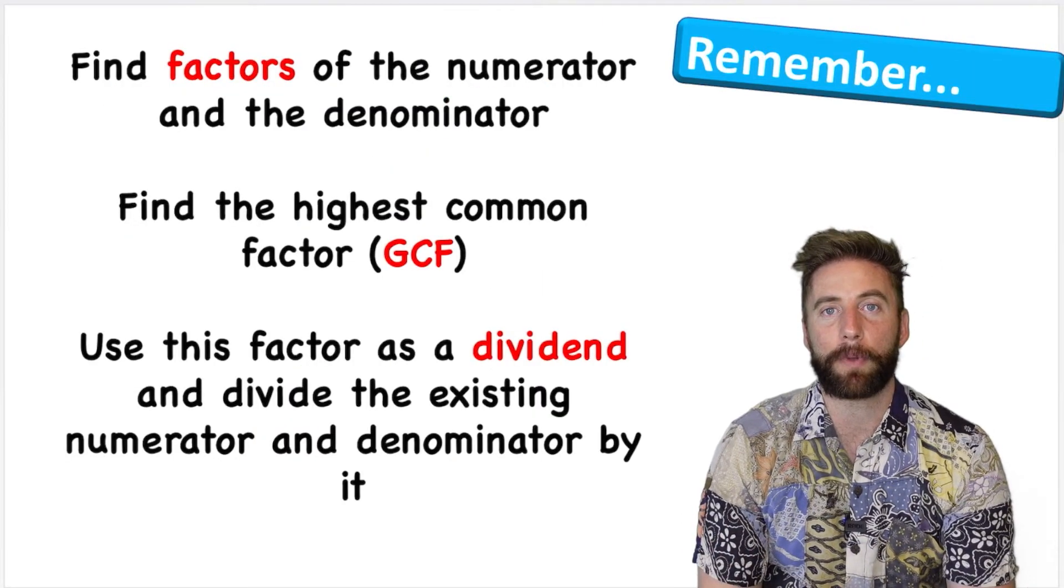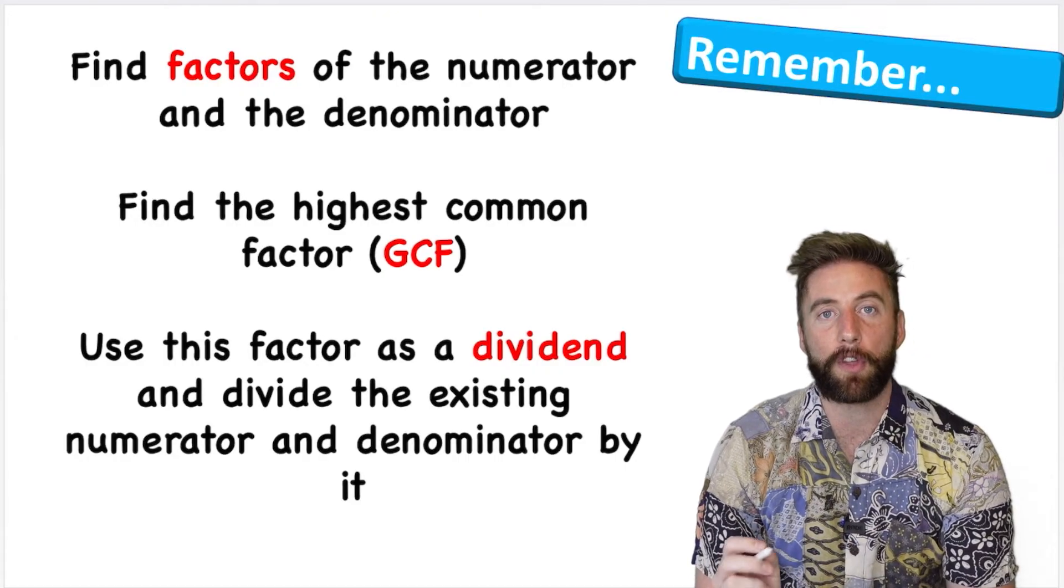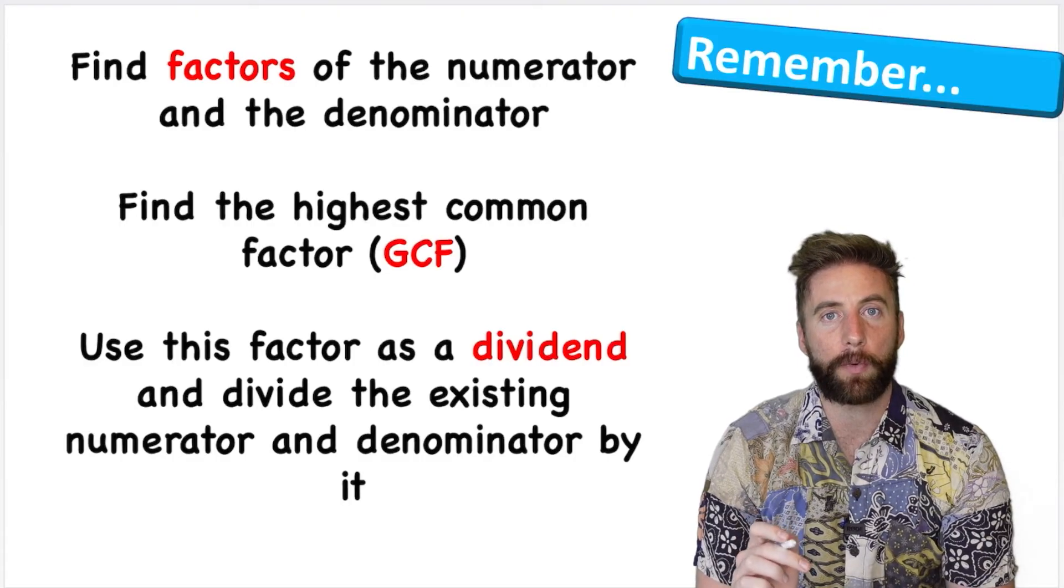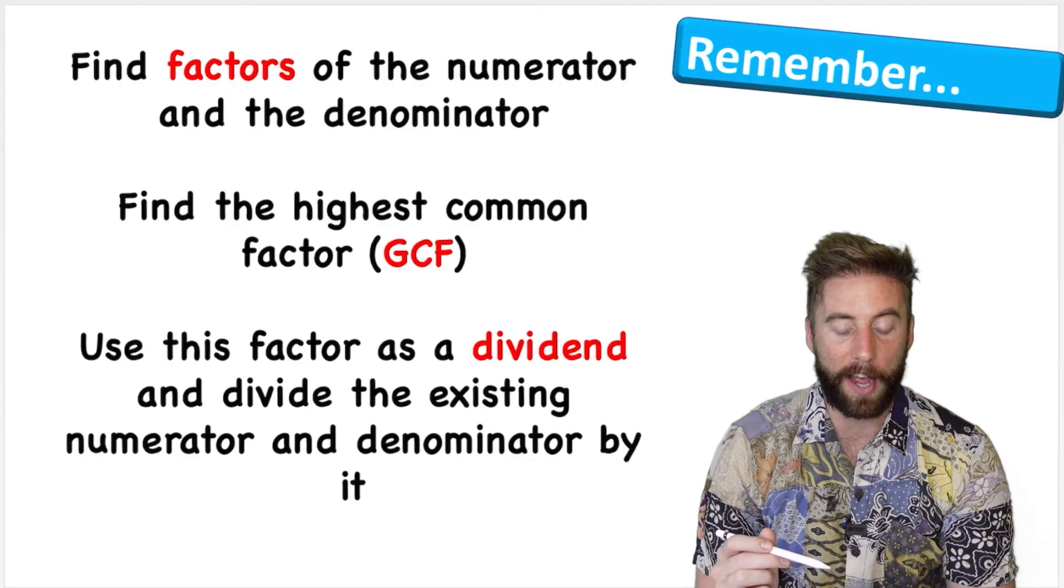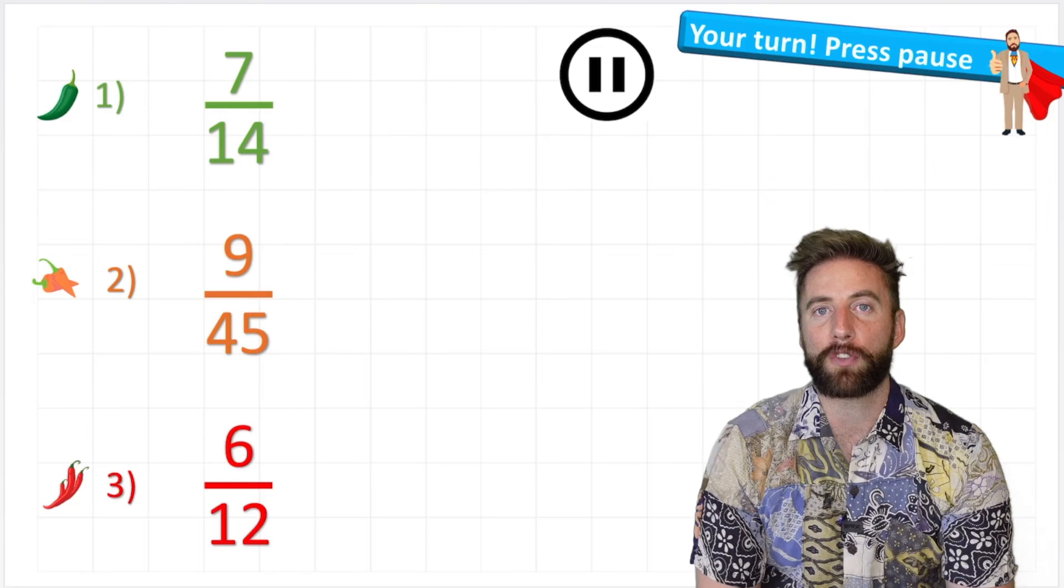Okay, there we are. That is how to simplify a fraction. Things to remember: first, find factors of the numerator and the denominator. Then look for the highest common factor within those two groups. And then use this factor as a dividend and divide the existing numerator and denominator by it.